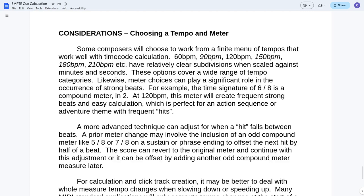A more advanced technique can adjust for when a hit falls between beats. A prior meter change may involve the inclusion of an odd compound meter like 5/8 or 7/8 on a sustain or phrase ending to offset the next hit by half of a beat. The score can revert to the original meter and continue with this adjustment, or it can be offset by adding another odd compound meter measure later on. If I add a 5/8 or 7/8, that addition of one eighth note now offsets all subsequent beats by one half of a beat.